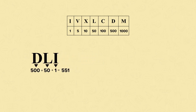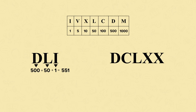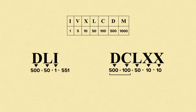Now let's look at another set of Roman numerals, this time D, C, L, X, X. D represents 500, C 100, L 50, and X 10 and another X which is another 10. So we add these all together — it's easier to add them in chunks. Let's add the hundreds together first: 500 add 100 is 600. And now the tens: 50 add 10 add 10 is 70. So 600 add 70 is 670. That's the value of these Roman numerals.